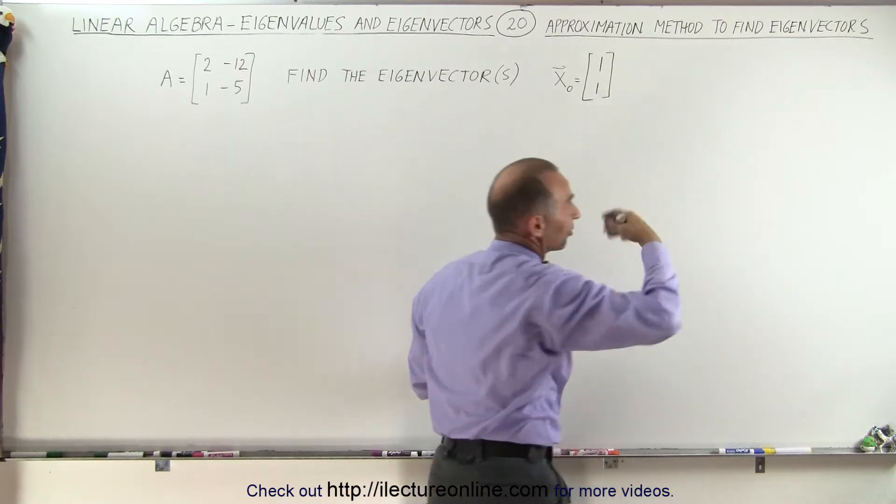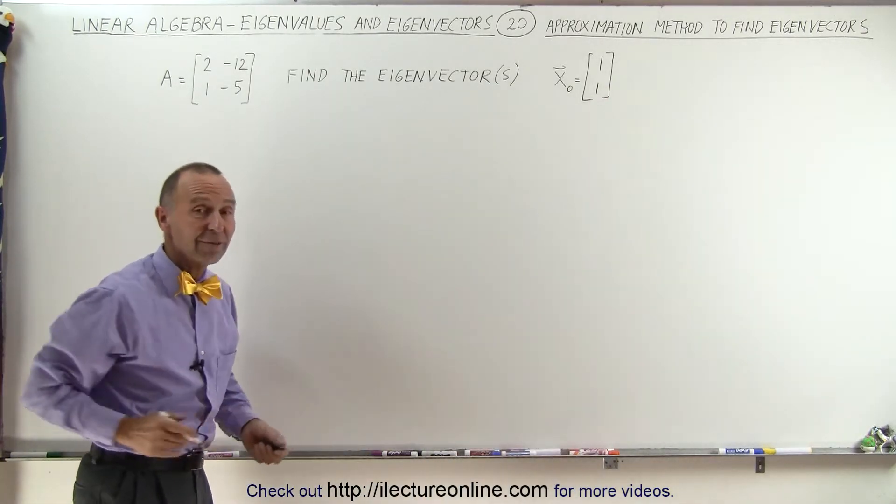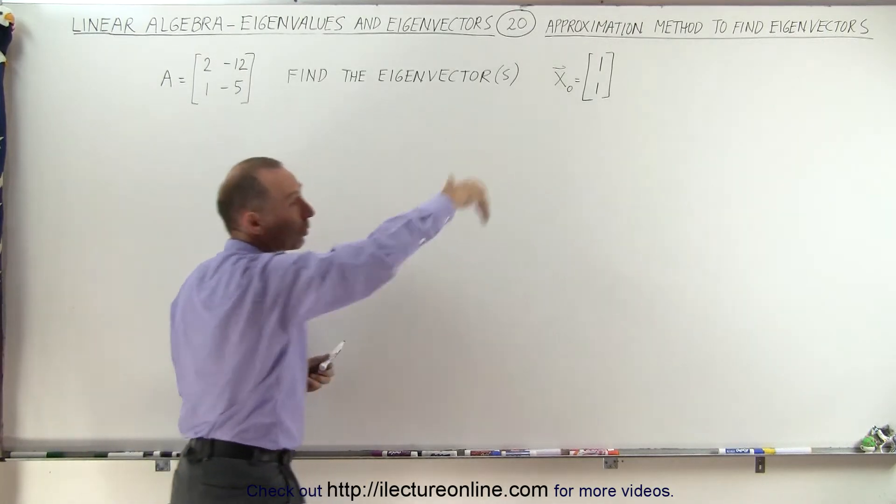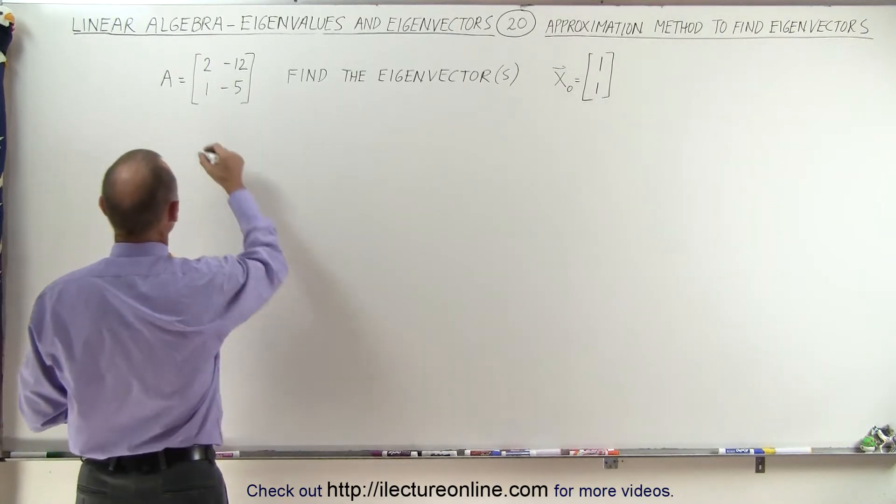We're going to call it [1, 1]. Maybe I'm lucky and that's the actual eigenvector. We would know then that if I multiply this matrix times [1, 1] and I get [1, 1] back then I found the actual eigenvector. Well let's see what happens.